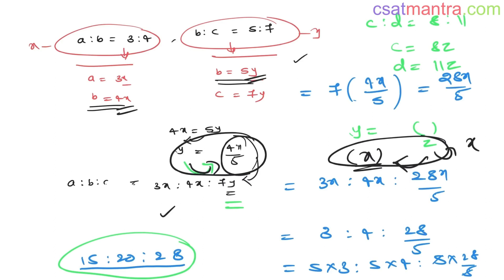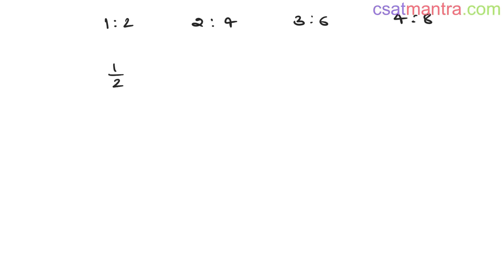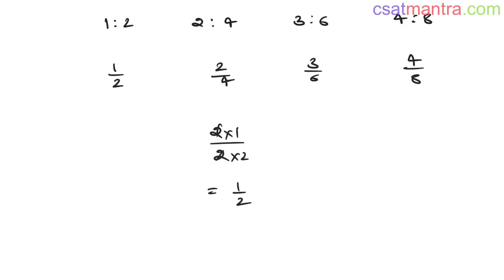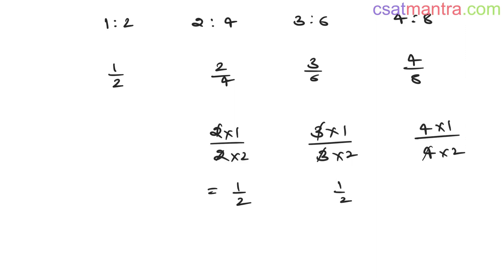Say you have ratios 1 is to 2, 2 is to 4, 3 is to 6, and 4 is to 8. You can write these as 1/2, 2/4, 3/6, and 4/8. Simplifying: 2/4 = 1/2, 3/6 = 1/2, and 4/8 = 1/2. So all of them are equal — they may look different but are essentially the same.